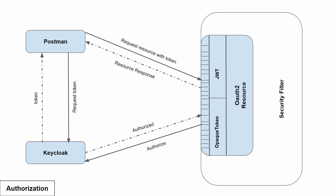In the authorization process, the OAuth2 resource library provides authorization on JWT as well as the opaque token. In authentication, the opaque token was sending the request to Keycloak for authentication, but in authorization, neither JWT nor opaque token sends the token to Keycloak. Instead, they do the authorization within the Spring Boot application itself.